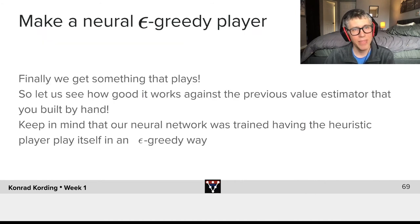Now the next thing is let's make a neural epsilon greedy player. We have something that plays. So let's see how good it works against the previous value estimator that you built by hand. Keep in mind that our neural network was trained having the heuristic players play itself in an epsilon greedy way.